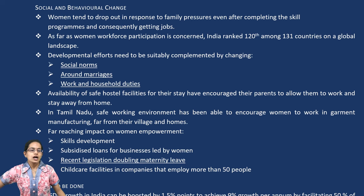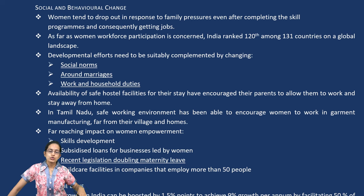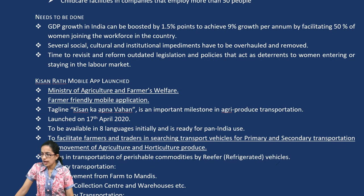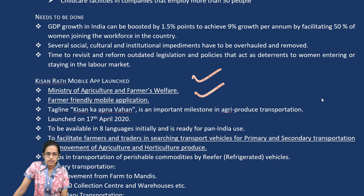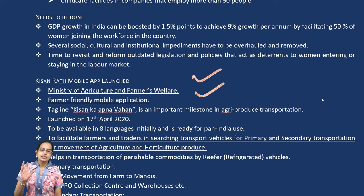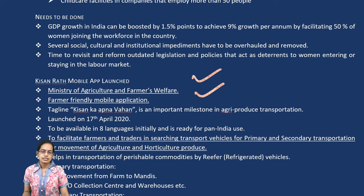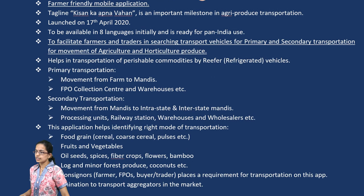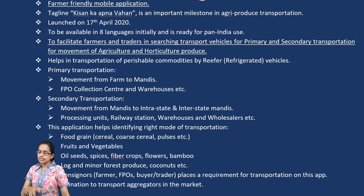We are also focusing on social and behavioral change — this covers the age of marriage, household duties, social norms, and existing legislations, including how maternity leave has been revamped. The Kisan Rath Mobile App is by the Ministry of Agriculture and Family Welfare. It's a farmer-friendly mobile app released in April, aiming to facilitate farmers with primary and secondary transportation of produce from farms to mandis and collection centers.